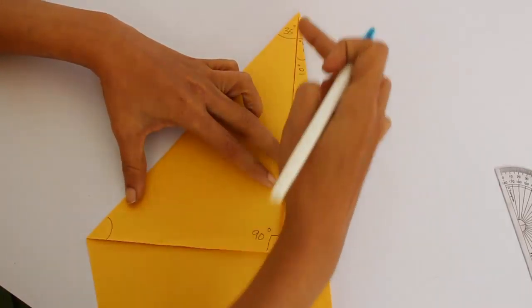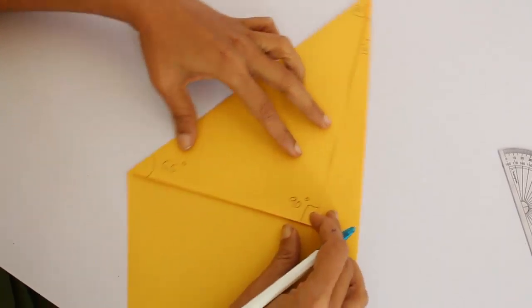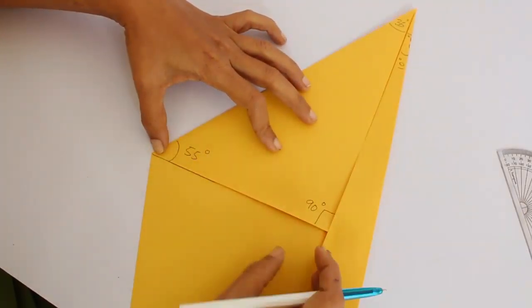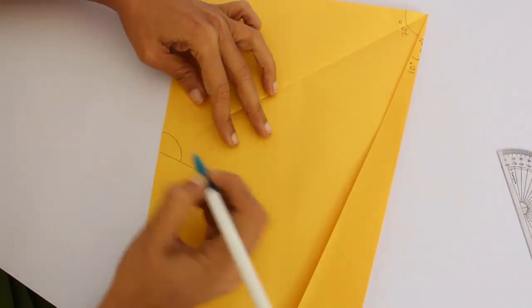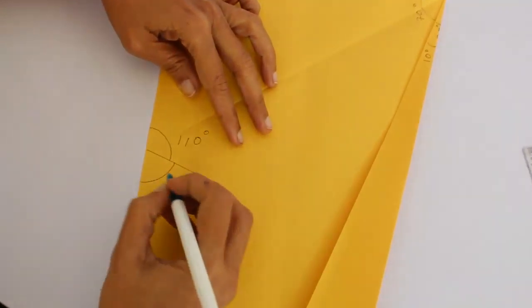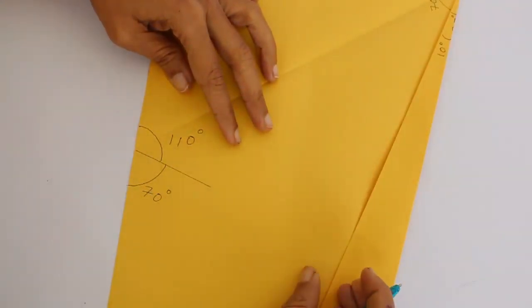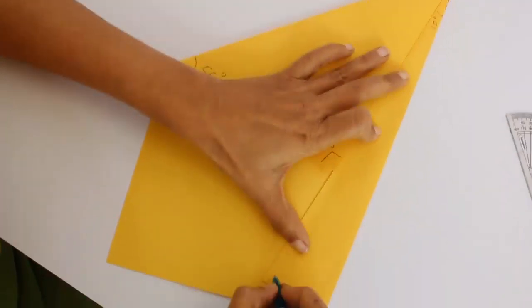And this will be 90 minus 35, which is 55 degrees. And now if we open it up, this whole angle is 55 times 2, which is 110 degrees, and therefore the remaining angle is 70.